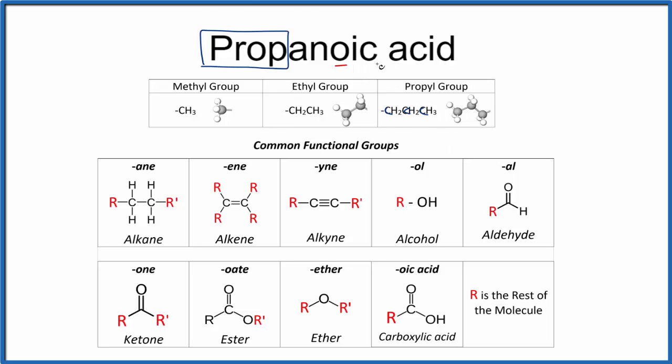And when we see O-I-C followed by acid, that's gonna be a carboxylic acid. We'll have a carbon double bonded to an oxygen and then an OH group, and then that R, that's the rest of the molecule. That's the other carbons that we're talking about.